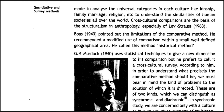Boas pointed out the limitations of the comparative method and recommended a modified use of comparison within a smaller, well-defined geographical area — he called this method the historical method. G.P. Murdock uses statistical techniques to give a new dimension to his comparisons, preferring to call it a cross-cultural survey. According to him, in order to understand what precisely the comparative method should be, we must bear in mind the kind of problems it is directed to solve. There are two kinds which we can distinguish as synchronic and diachronic.